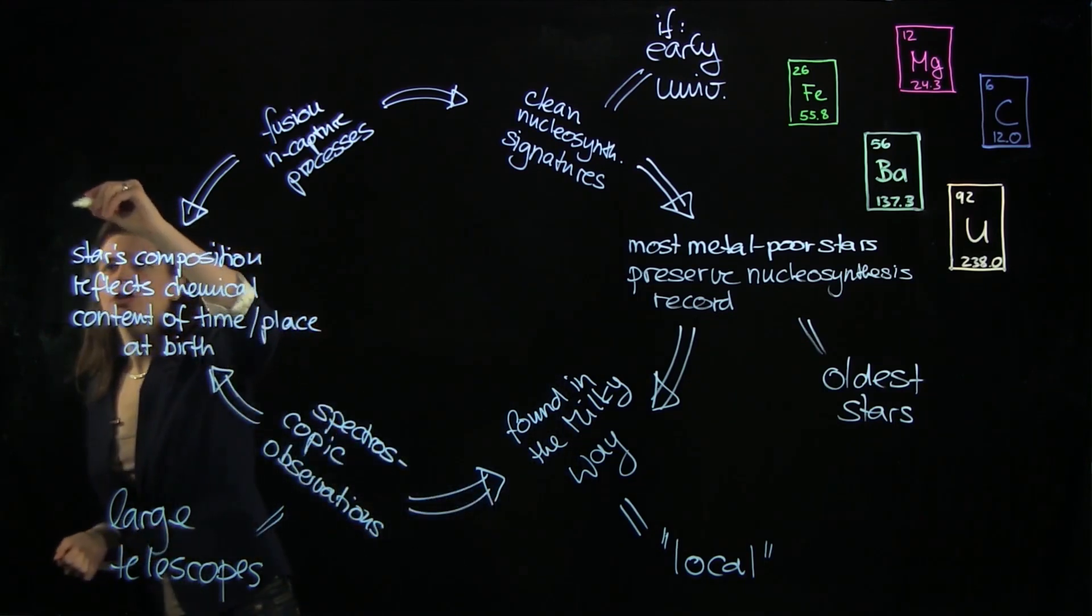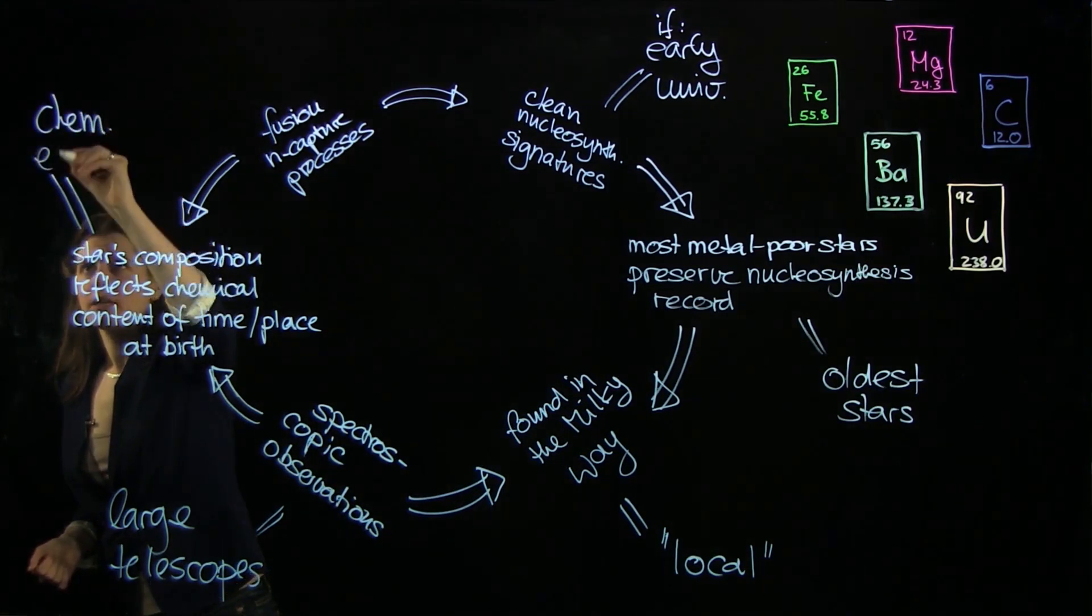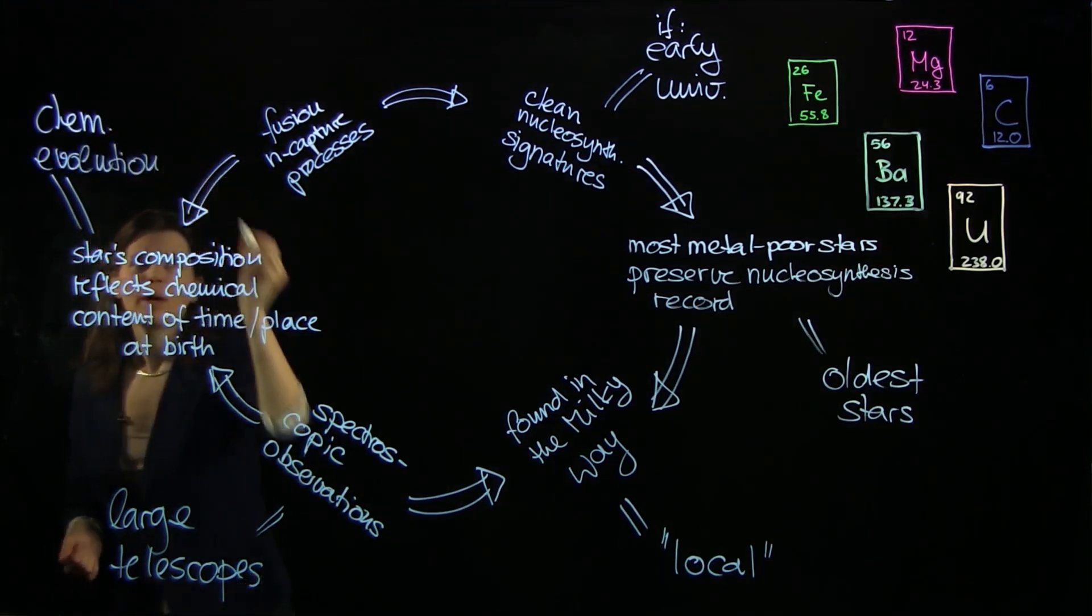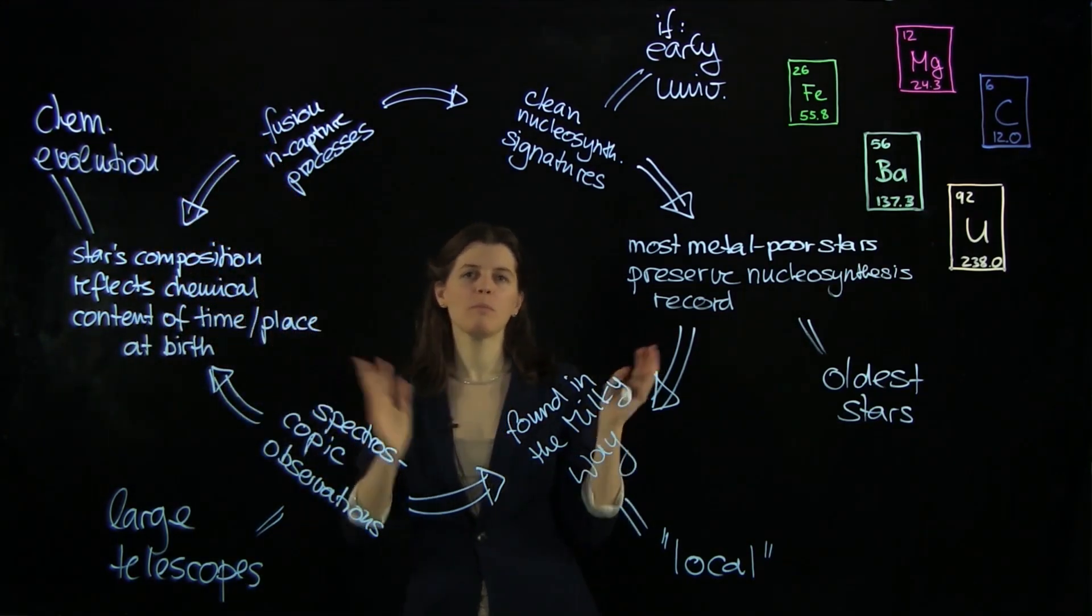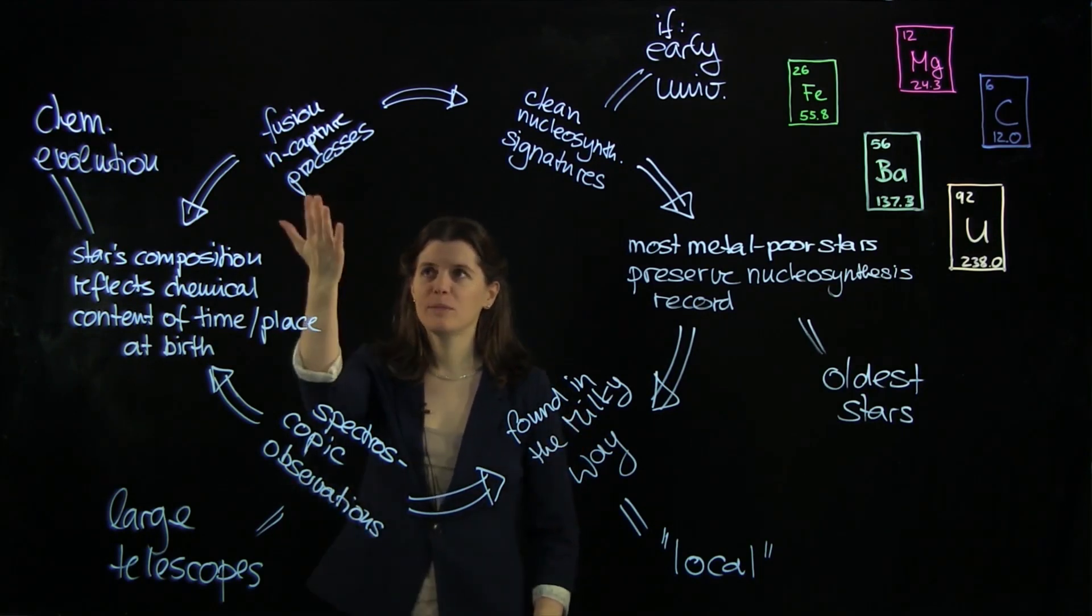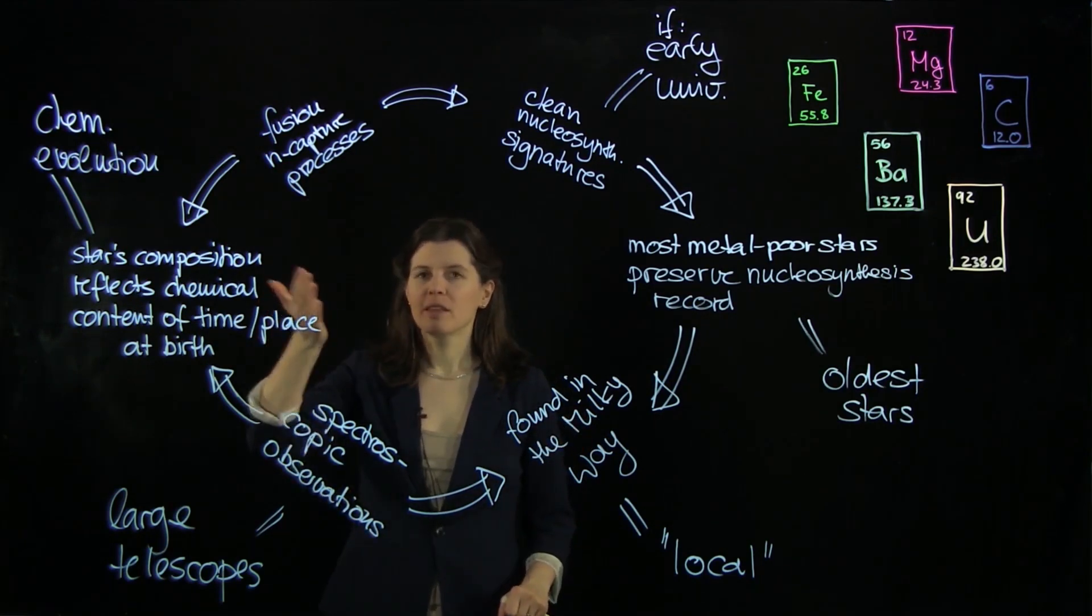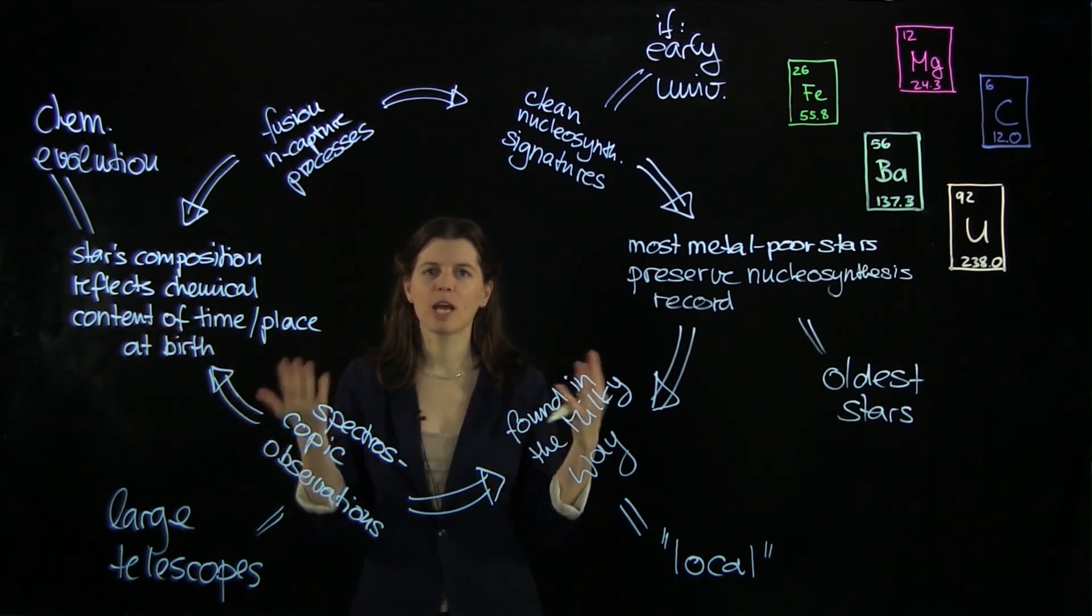So that's chemical evolution. And as I mentioned before, this is an ongoing process. Much of all the elements are still being produced right now. There's probably a supernova going off right now as we speak somewhere in the universe, where more elements are being created. And so the chemical makeup of the universe is changed again. So it's a continuously changing process.